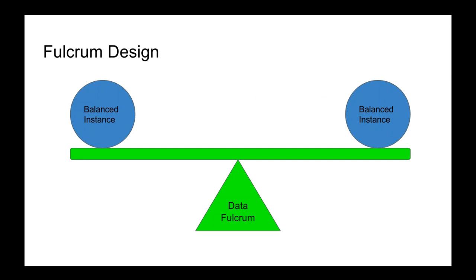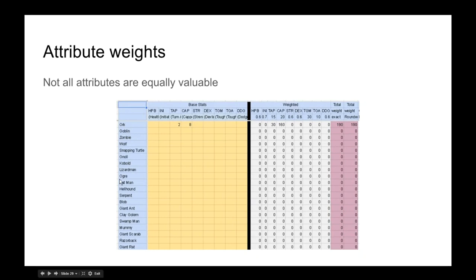So a method we developed on that game and I've used on many games since is called Fulcrum, where you take one piece of data in our previous example here. Let's say we take the orc, right, and we make him the Fulcrum.